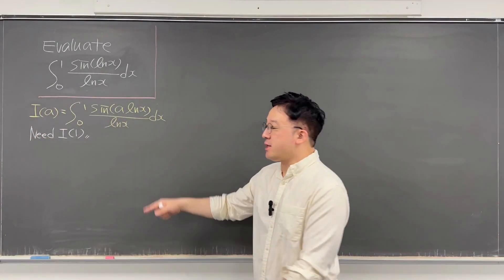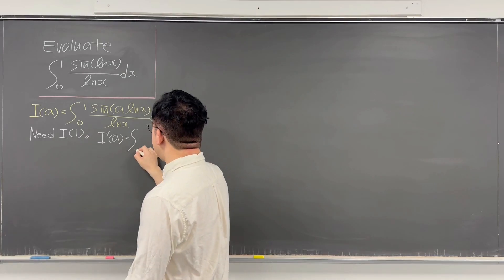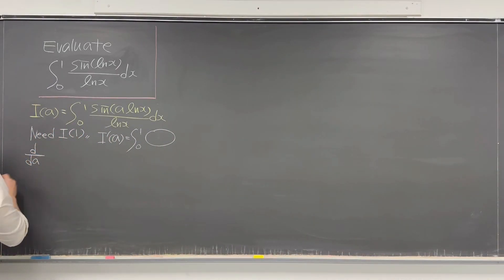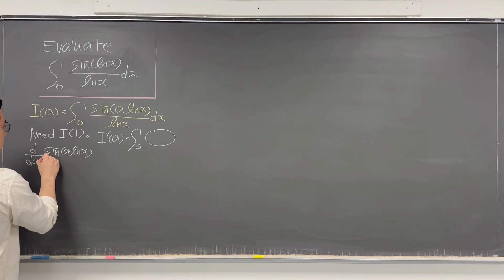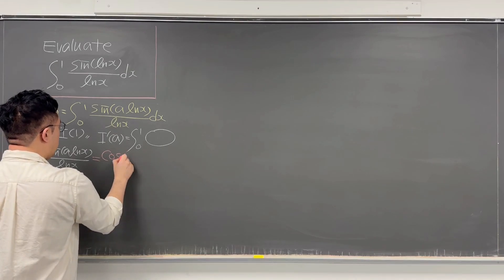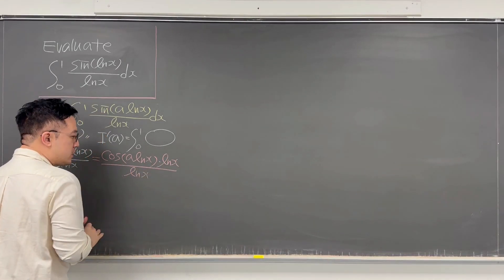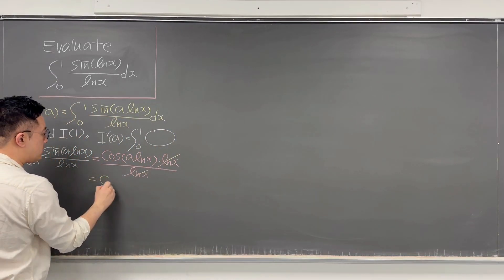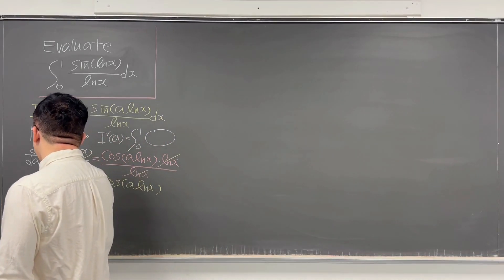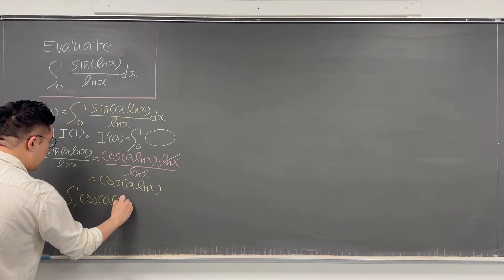Then I'll differentiate I(a) with respect to a. So I'(a) is going to be the integral from 0 to 1 of the derivative d/da of sine of a·ln x over ln x. Using the chain rule, this has to be cosine of a·ln x times ln x over ln x. We can cancel the ln x, so it's just cosine of a·ln x. So I'(a) = ∫₀¹ cos(a·ln x) dx.